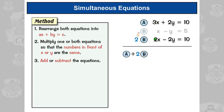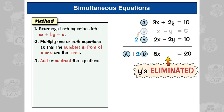We're going to have 3x plus 2x, so we're going to get 5x, and the y's will disappear, and then ten plus ten equals twenty. So the y's have been eliminated, and that's why they call it the elimination method.